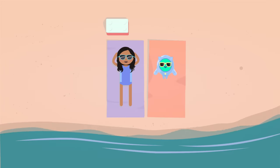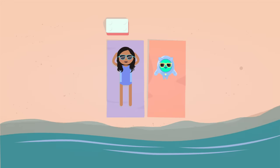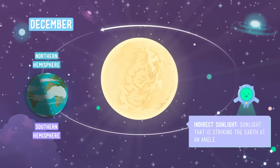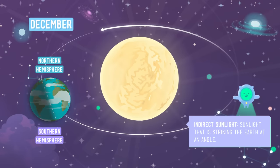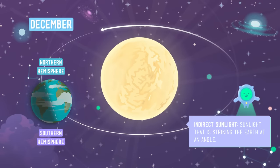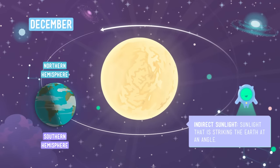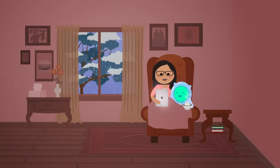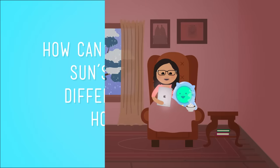It's summertime and the living is easy. Temperatures are warm and days are long. In December, though, the northern hemisphere is tilted away from the sun. It's getting indirect sunlight, meaning light is hitting it at an angle. Indirect sunlight means cooler temperatures, shorter days, and for lots of folks, hot cocoa and bundling up since it's winter.